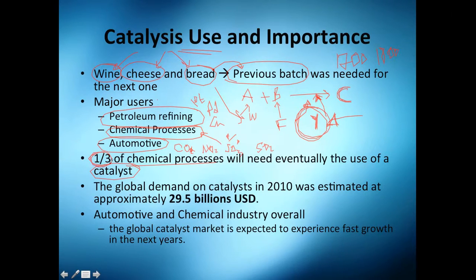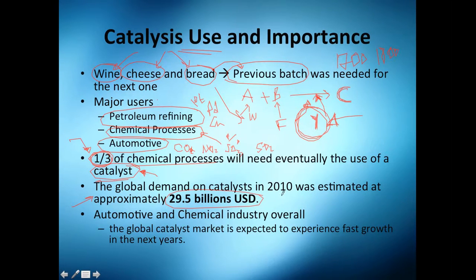One-third of all chemical processes will eventually need or use a catalyst, and that's why it's so important. Even though you might think catalysts are only used in super high-tech processes, that's not really the case — it's very common. Chances are you're already using a substance that was produced with a catalyst. The global catalyst market was estimated at almost 3 billion dollars, which should be an incentive to research and understand catalysts more.